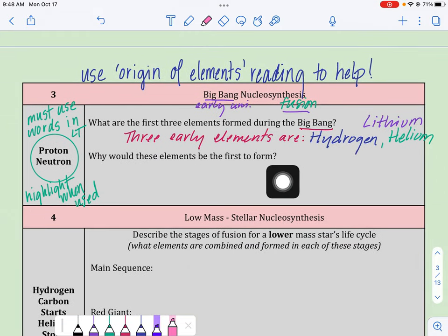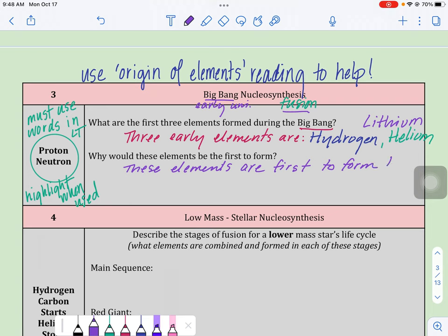So when we think here, why would these be the first elements to form? Again, getting our sentence starter going. These elements are first to form because, and then we want to explain out our thinking, our reasoning on why those happened first, initially, as the universe started being created. Well, those happened to be some of our very first elements because of their size.